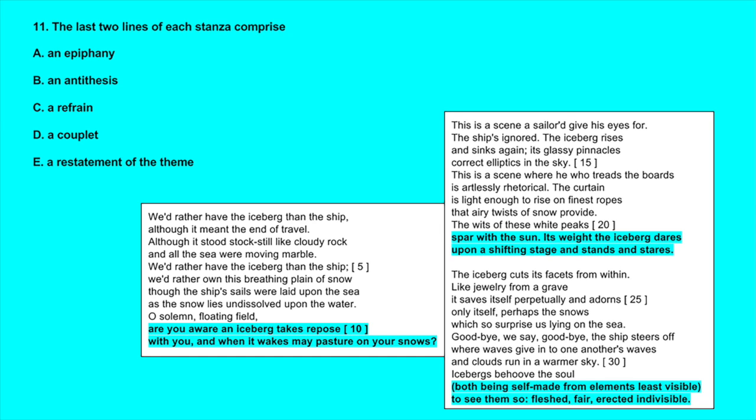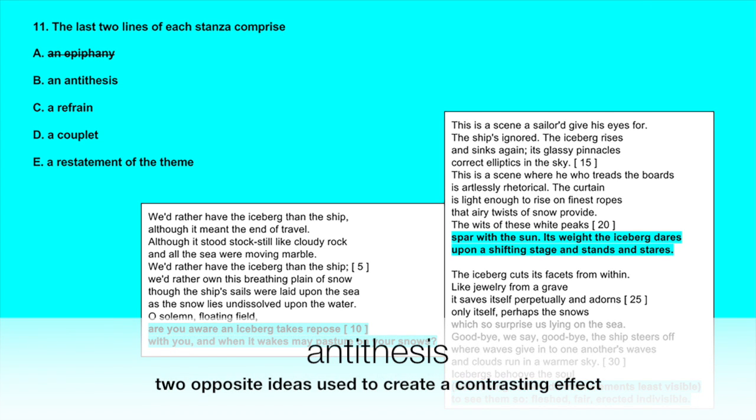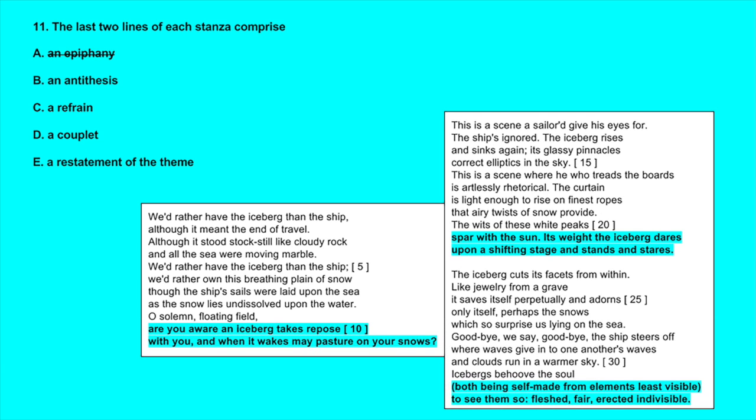B, an antithesis - this is when two opposite ideas are put together in a sentence to achieve a contrasting effect. We don't really have this in any of the sets, so this doesn't work. C, a refrain - no, these lines don't repeat, so C won't work.